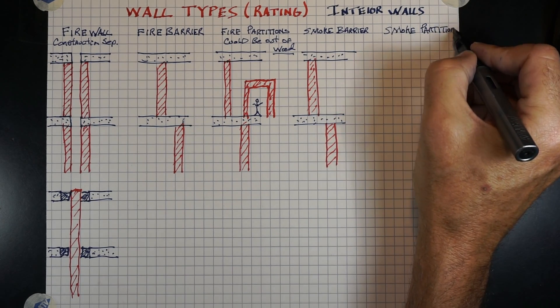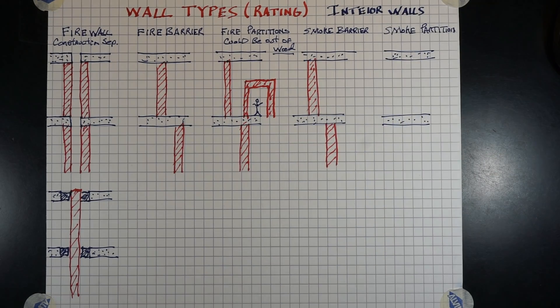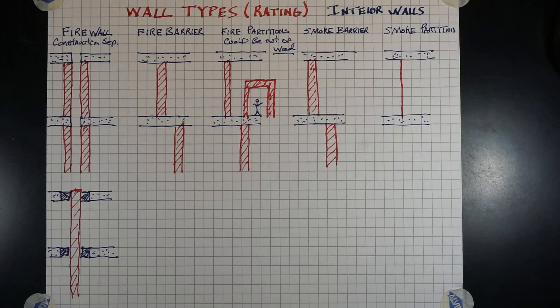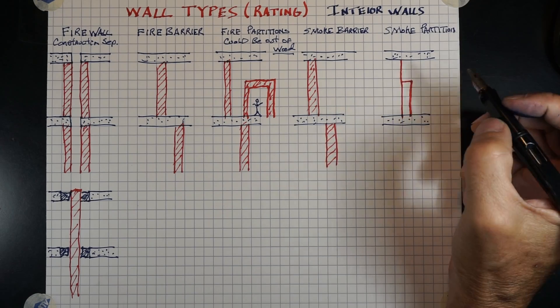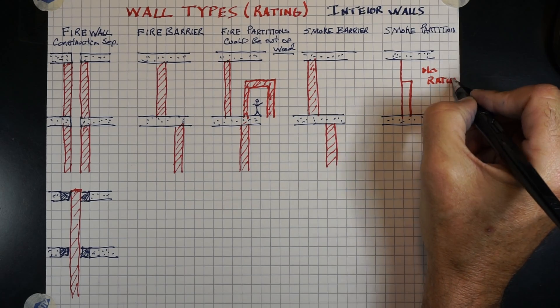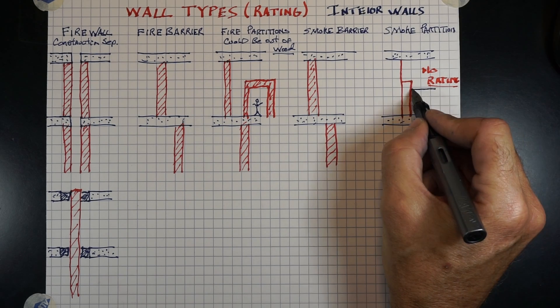Then we have a smoke partition. A smoke partition is just that. It is a partition. It could go from the floor to deck above with rock or drywall on one side. It has no rating, no fire rating at all, and it only limits the transmission of smoke.